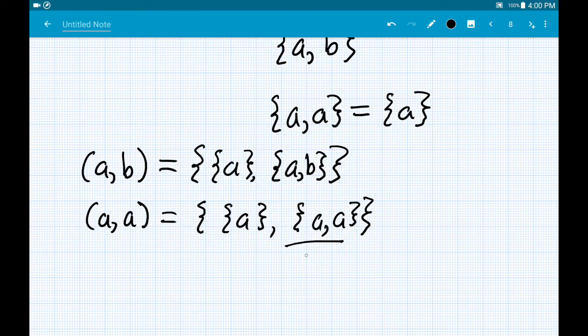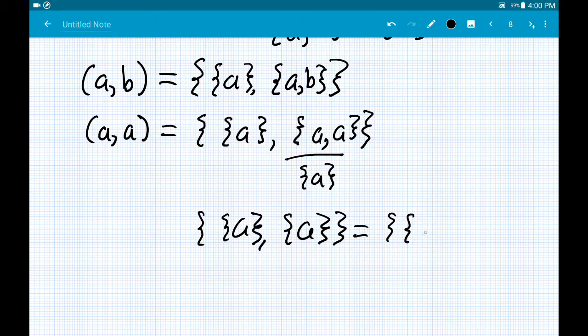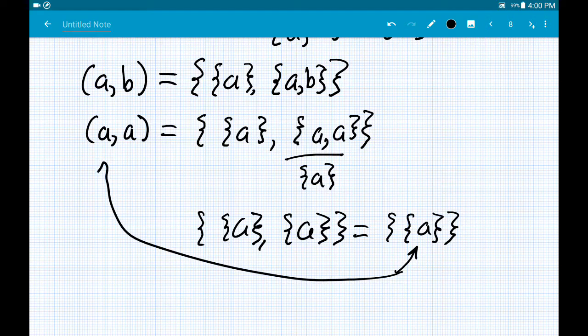Now this just reduces to the set {A}, and set of A, and this, again, by extensionality reduces really to just the set of the singleton. And now you might wonder, well, how do I distinguish the first from the second at this point? Well, the content of the singleton is the first, and hey look, I'm right about that.